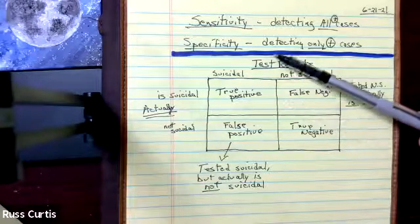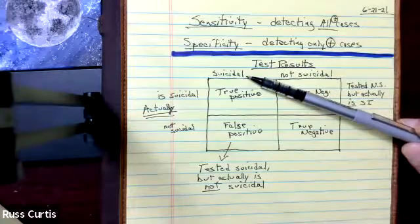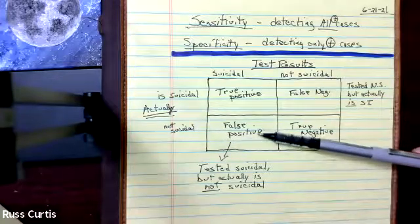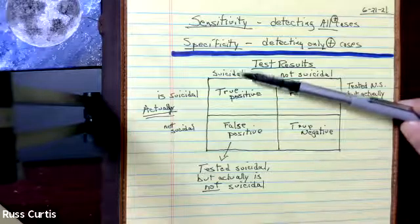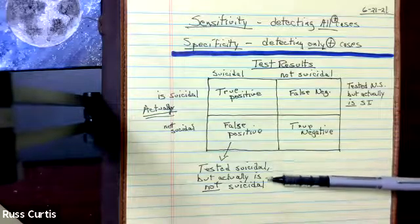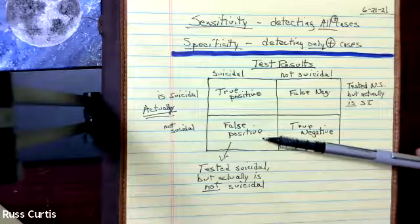All right, so then down here, we've got test results saying, yes, suicidal, but actually not suicidal, that's a false positive. Test results said, yes, we actually know it's not, it's a false positive. So tested suicidal, but actually is not false positive.